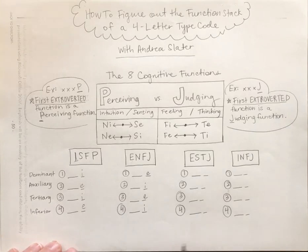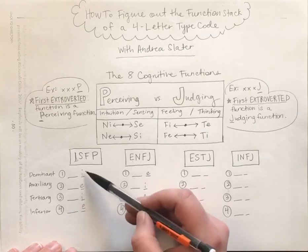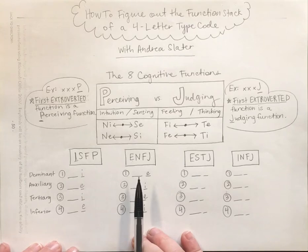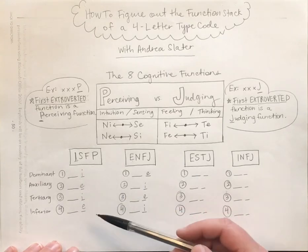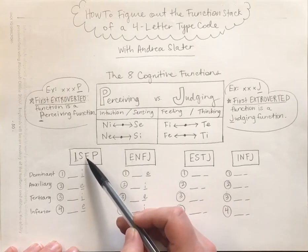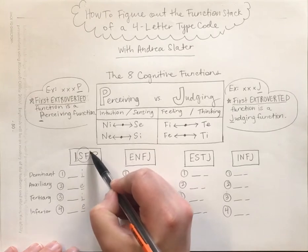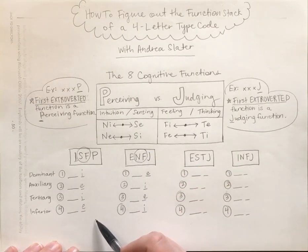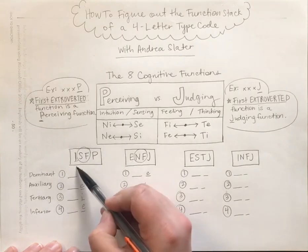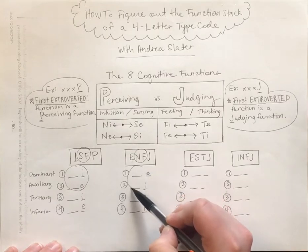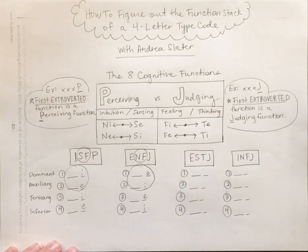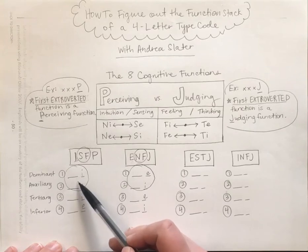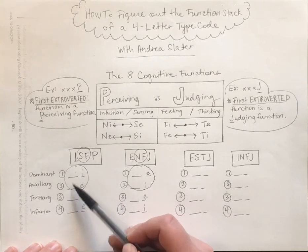To start actually finding the order of the complete function stack, we're going to look at the second and third letters in our type code and circle those letters. For ISFP, we have S and F. For ENFJ, we have N and F. Go ahead and circle positions 1 and 2 in your function stack. These two circled letters will go into both of those blanks — we're just not sure which order yet. It could be S, F or F, S.